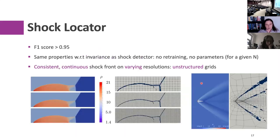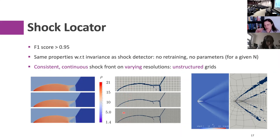We trained it on the same data and were able to get this to work as a shock localizer within each element. It has the same properties as before: no retraining needed for different discretizations, no parameters to fiddle with. For the classical double Mach reflection test problem, we get a nice, consistent, continuous prediction of the shock location. It works well, is consistent, and converges as the grid is refined.